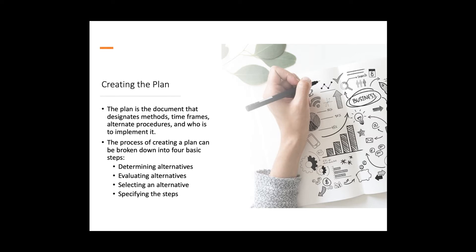The process of creating a plan can be broken down into four steps. First, determining the alternatives — what are the possible ways of accomplishing this goal and the options in front of you to deliver on your responsibilities. Then, evaluating the reasonableness: how plausible, how accomplishable, and what are the odds of each set of alternatives.